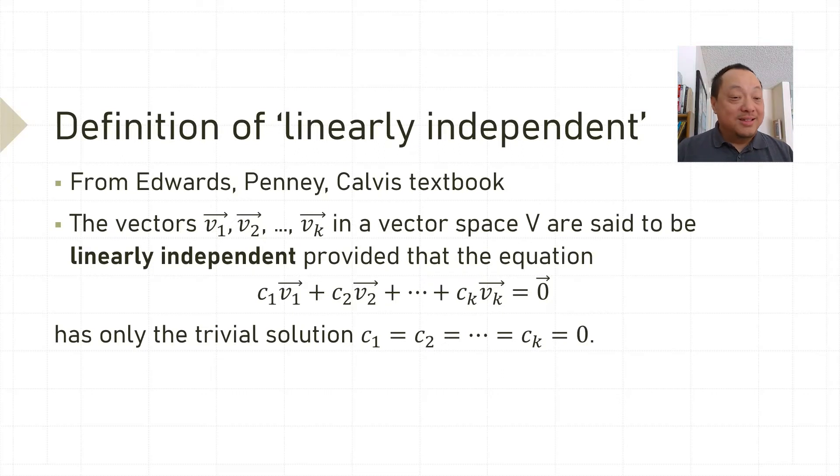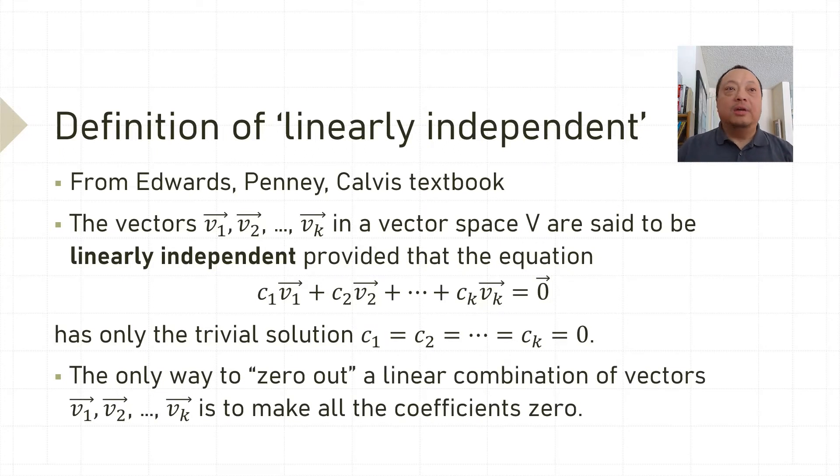Has only the trivial solution c1 = c2 = ... = ck = 0. Another way to think of it is that the only way to zero out a linear combination of a set of linearly independent vectors is to make all the coefficients 0.